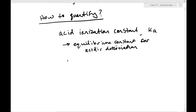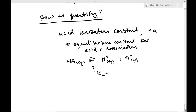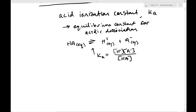The acid ionization constant is also called the dissociation constant, and essentially it is the equilibrium constant for acidic dissociation. For example, if we have some generic acid HA dissolved in an aqueous environment, it can dissociate to form H⁺ (aqueous) and A⁻ (aqueous). This is an equilibrium reaction for weak acids, so we have an equilibrium constant associated with it. Written as a dissociation, this is called the acid dissociation constant, or Ka. It is equal to the concentration of H⁺ multiplied by the concentration of the dissociated acid divided by the concentration of the associated acid.